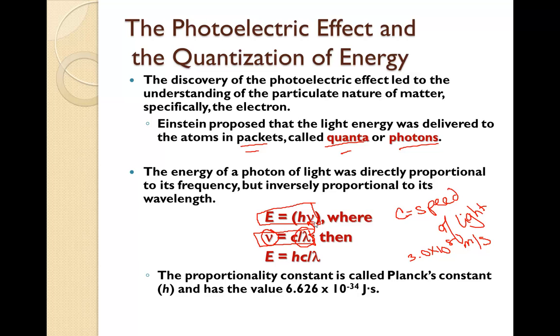H times c over lambda. The proportionality constant is called Planck's constant, which is h. And it has a value of 6.626 times ten to the negative 34 joules per second.